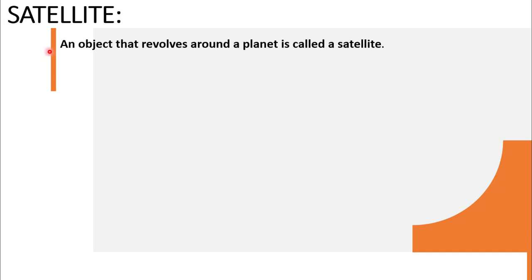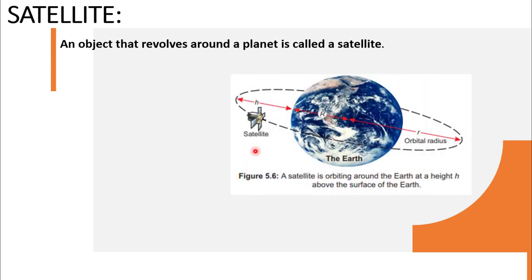First of all, what is a satellite? An object that revolves around a planet is called a satellite. Look at this figure, students — a satellite is revolving around the Earth at some height above the surface of the Earth. This is a satellite which is revolving around the Earth at a height above the surface.